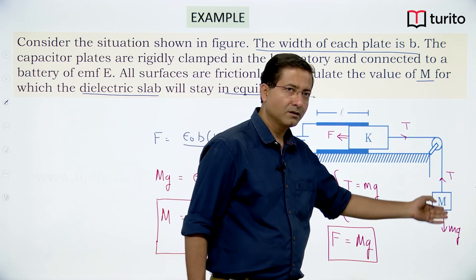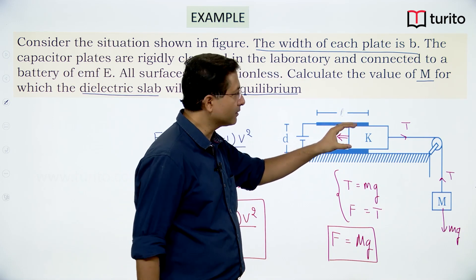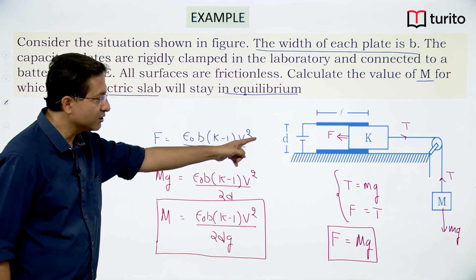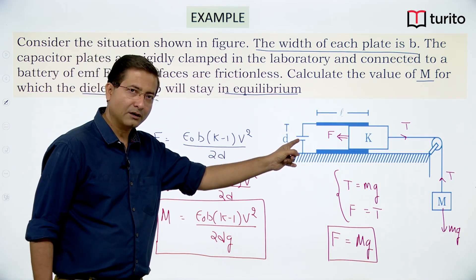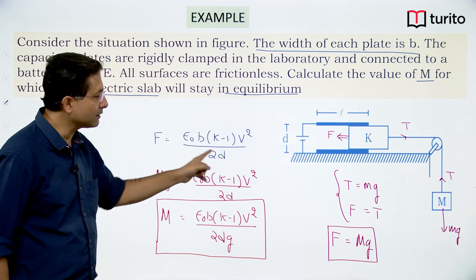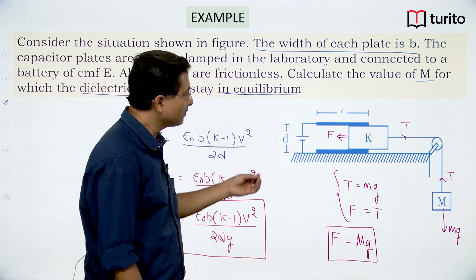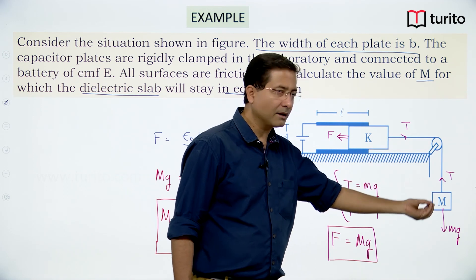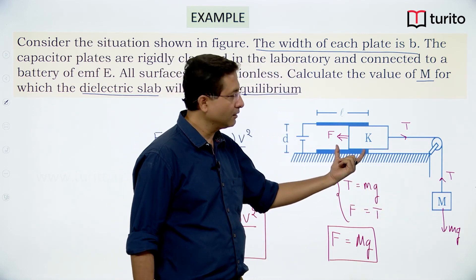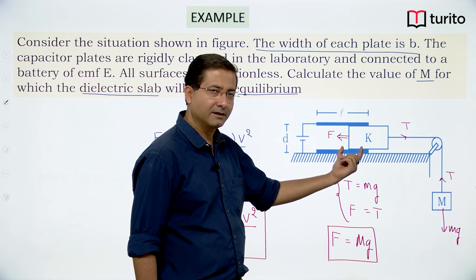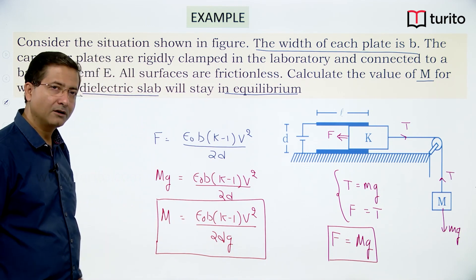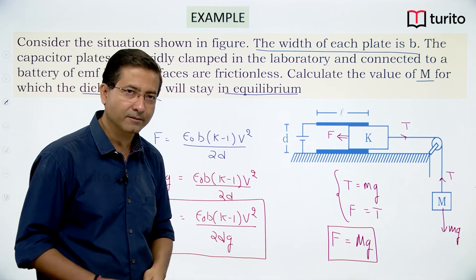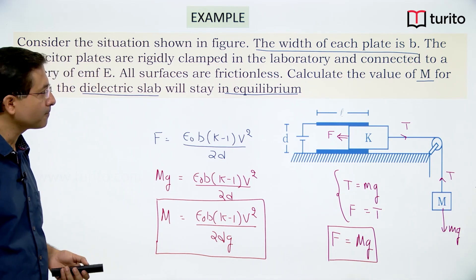This applies Newton's law — the only new thing in this chapter is that when the slab is placed partially inside and the potential remains constant, the force is given by that formula. Similarly, if charge is given to the plates and we need to find mass, the force depends on the location x of the slab, so we substitute x and simplify to get m.